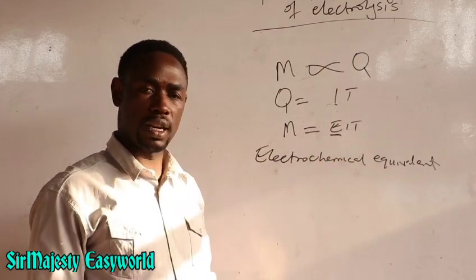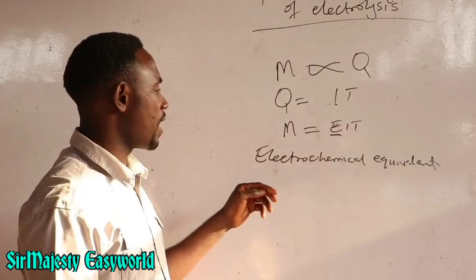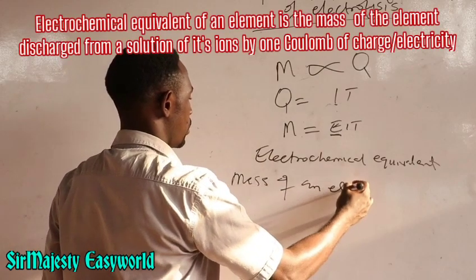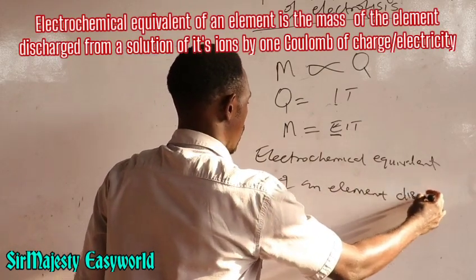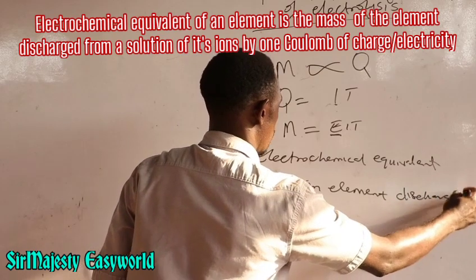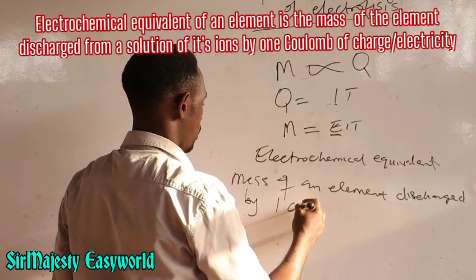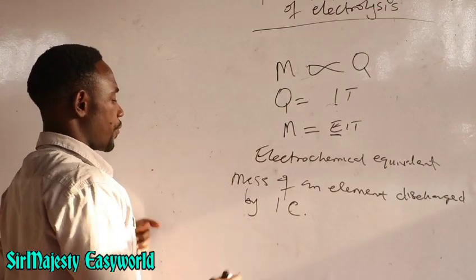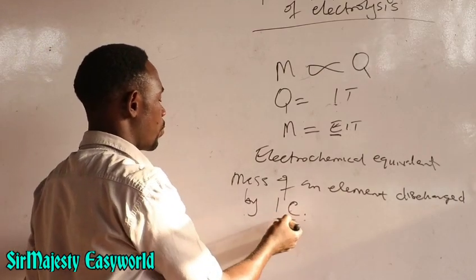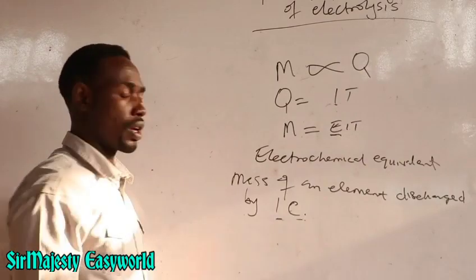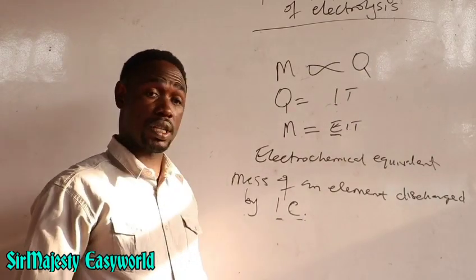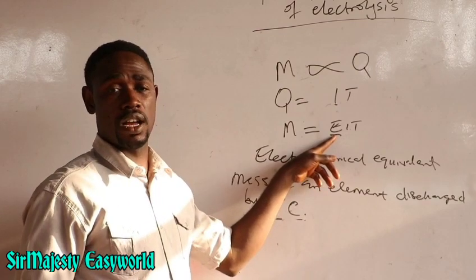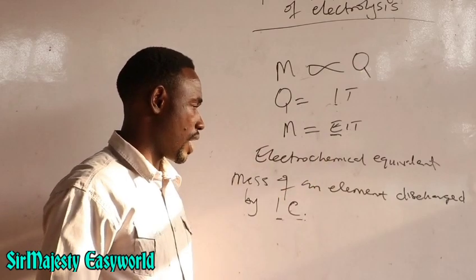By definition, the electrochemical equivalent is the mass of an element discharged by one coulomb of electricity. This means if you find the mass of any element that one coulomb of electricity will discharge, that is the electrochemical equivalent. In most calculations, E is treated as a constant because its value is very small. But if you can find it and substitute it, you get your answer straight.